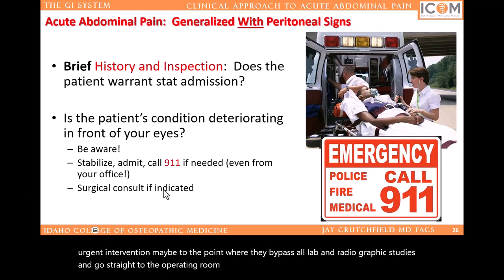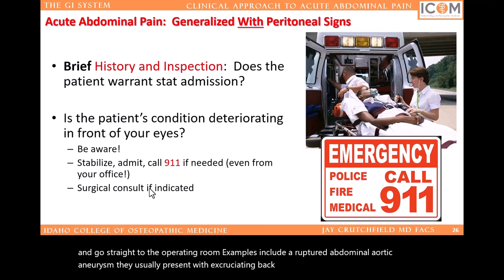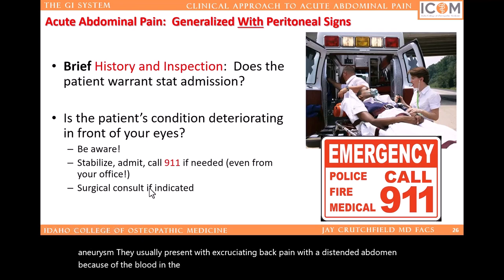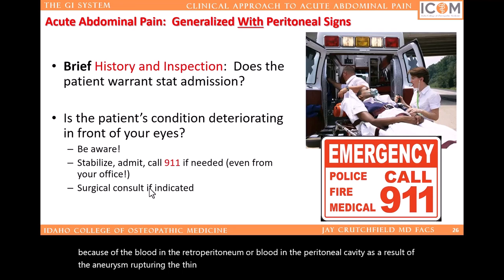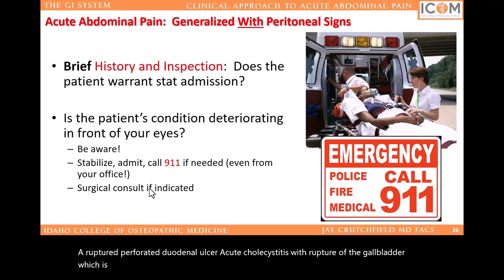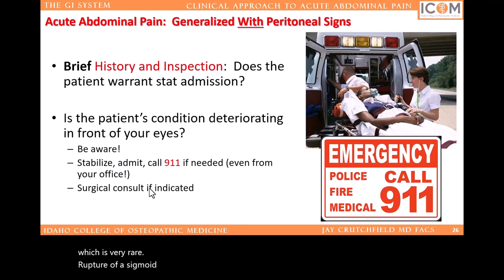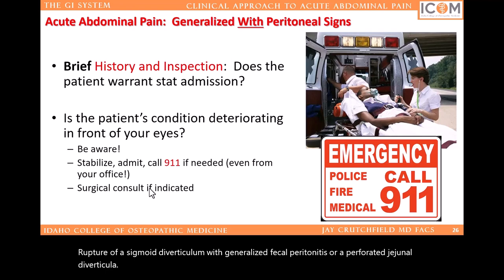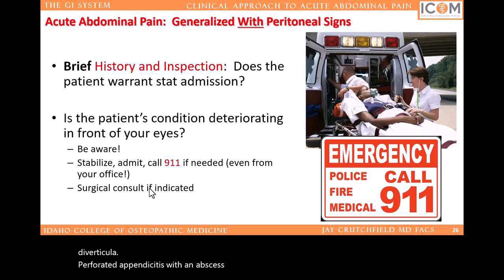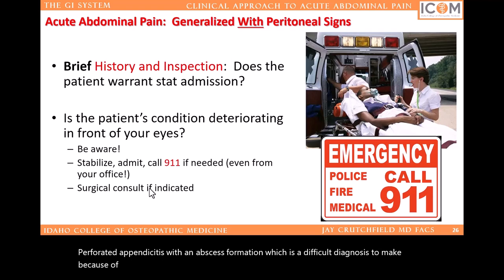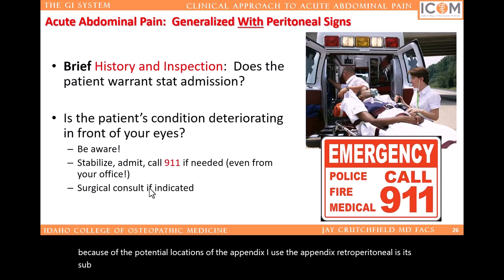Examples requiring urgent intervention include a ruptured abdominal aortic aneurysm — they usually present with excruciating back pain with a distended abdomen because of blood collecting in the retroperitoneum, or blood in the peritoneal cavity as a result of the aneurysm rupturing the thin membrane of the retroperitoneum. A ruptured perforated duodenal ulcer. Acute cholecystitis with rupture of the gallbladder, which is very rare. Rupture of a sigmoid diverticulum with generalized fecal peritonitis. A perforated jejunal diverticula. Perforated appendicitis with abscess formation — a difficult diagnosis to make because of the potential locations of the appendix: is it retroperitoneal, subsecal, intraperitoneal, or a combination?